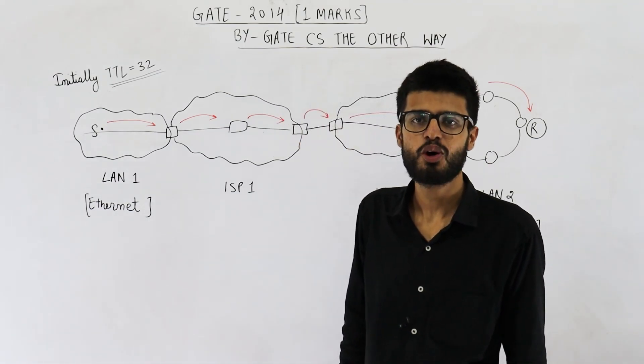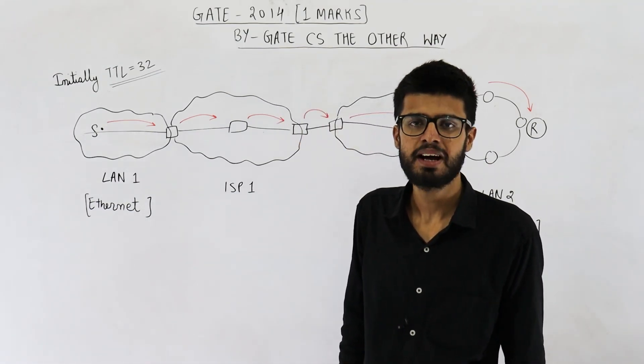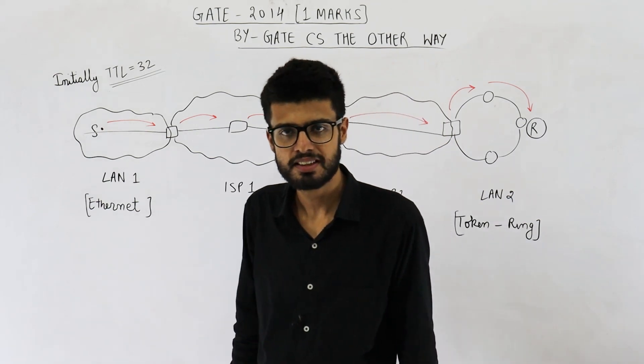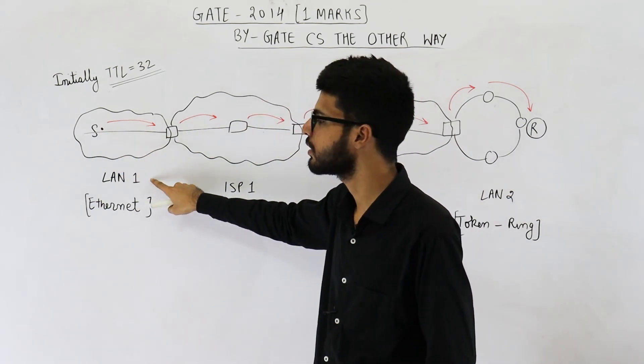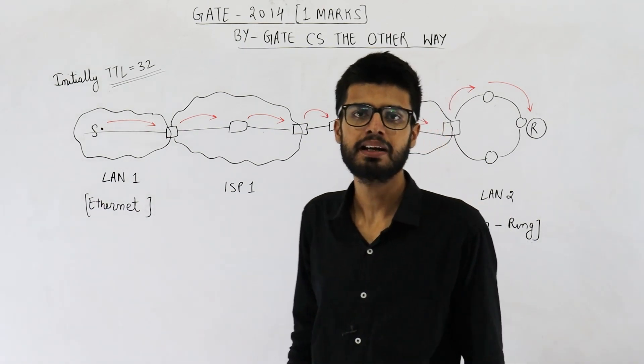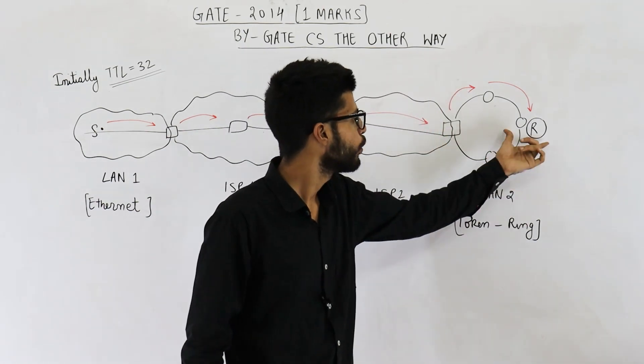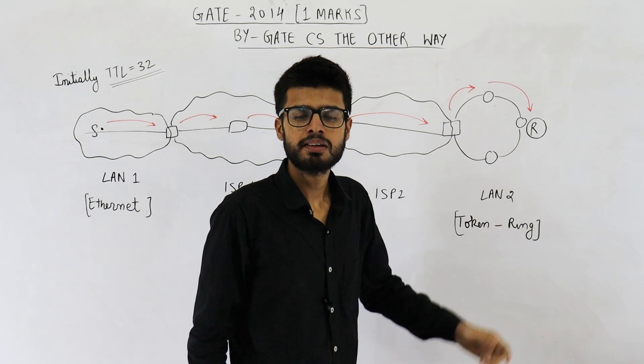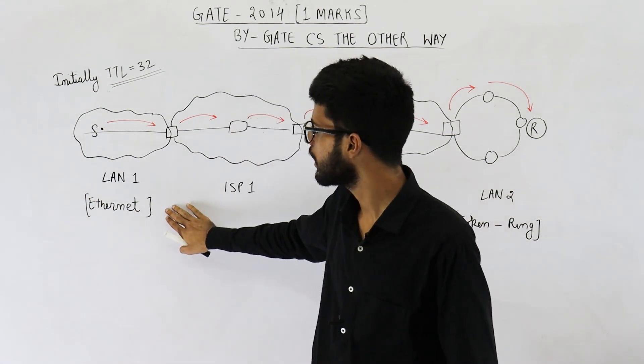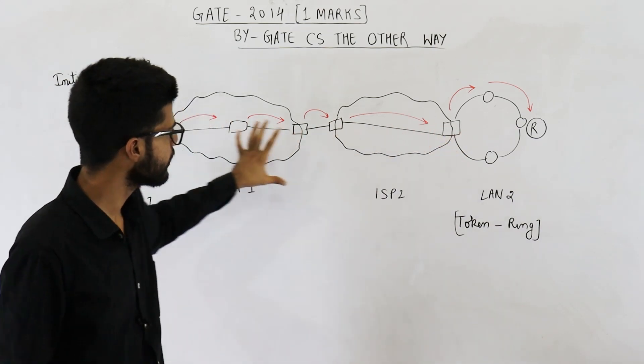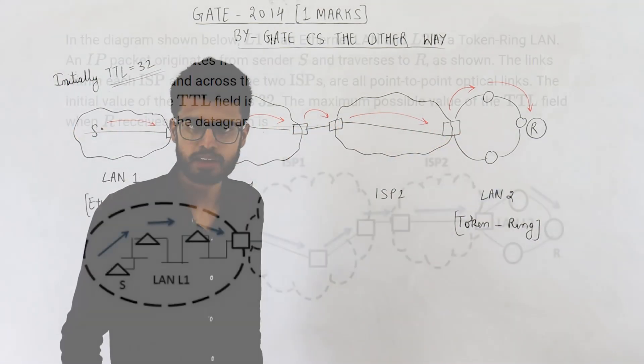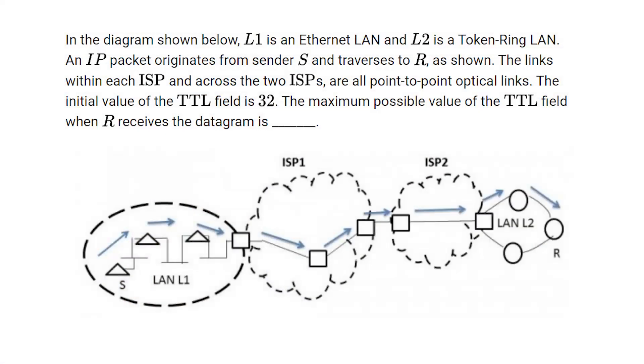Hello people, welcome back. The question is from GATE 2014 exam and is for one mark. Question says, some source S which is present in LAN 1 wants to send an IP packet to some receiver R which is present in LAN 2. Now LAN 1 is an Ethernet LAN and LAN 2 is token ring. This diagram is given as is in the question. If you want to read the entire question, you can read it.